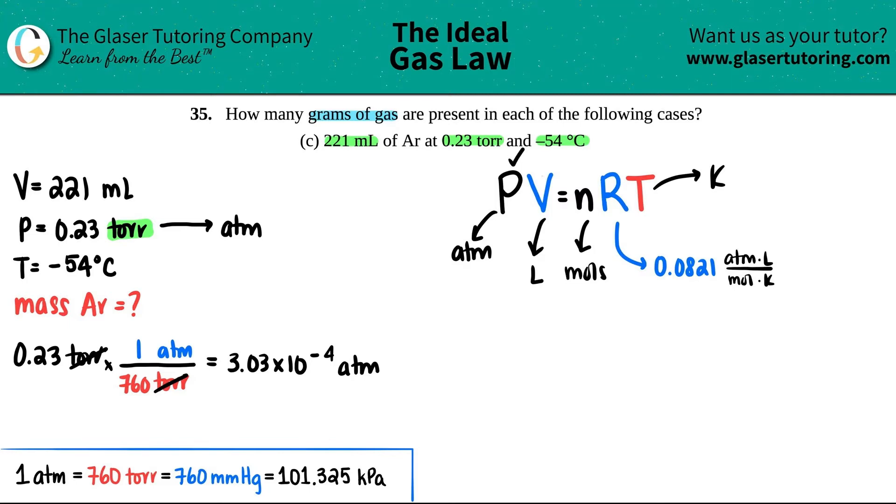The volume has to be in liters. They gave it to us in milliliters, so we have to convert that into liters. Milliliter to liter, you just divide by 1000. You could take the decimal and just move it to the left three times, so this would be 0.221 liters.